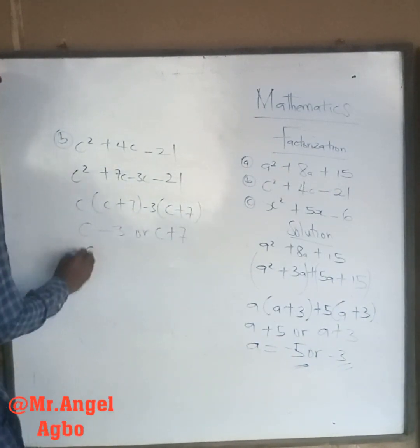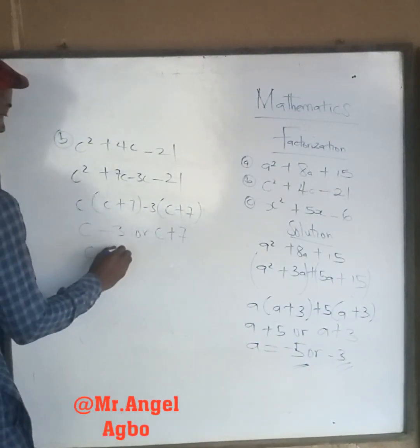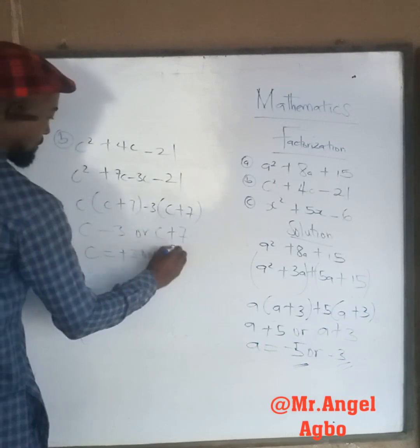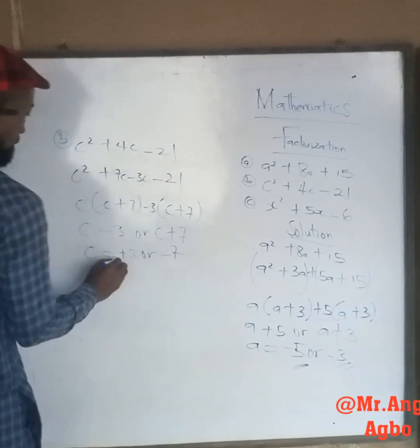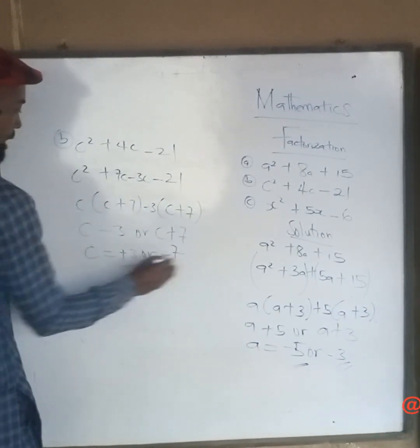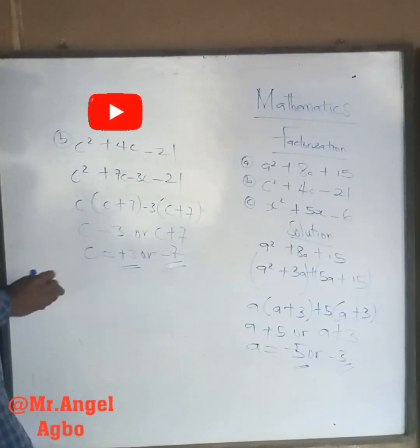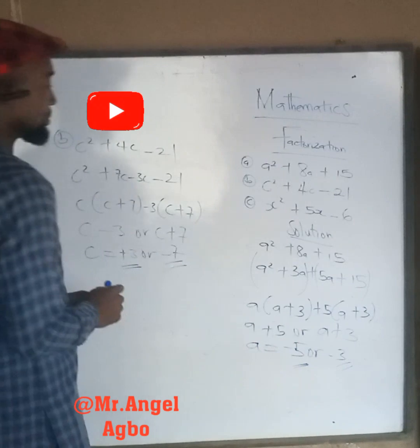So we have c minus 3, times c plus 7. So our c is equal to positive 3 or negative 7. These are the two solutions.